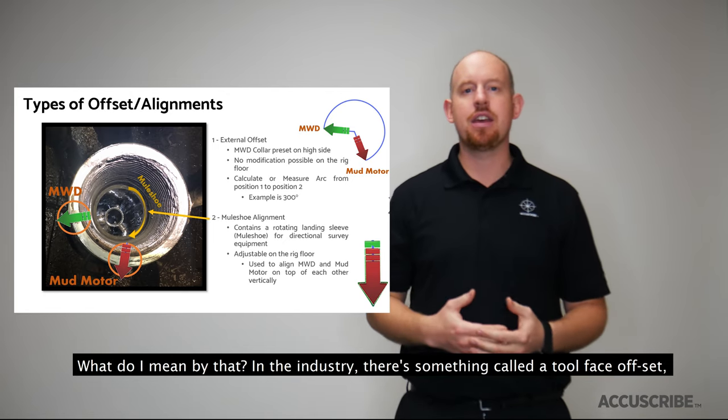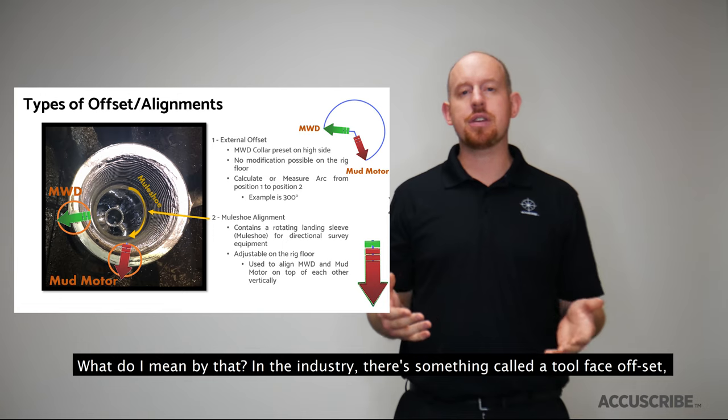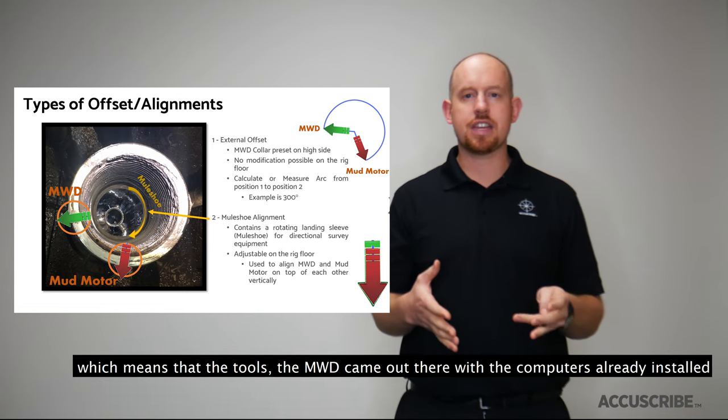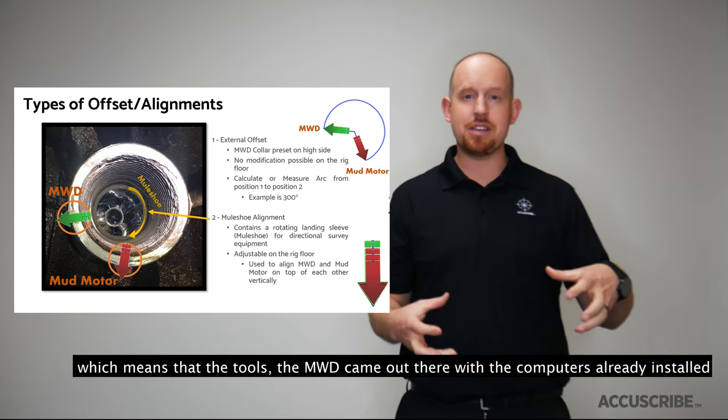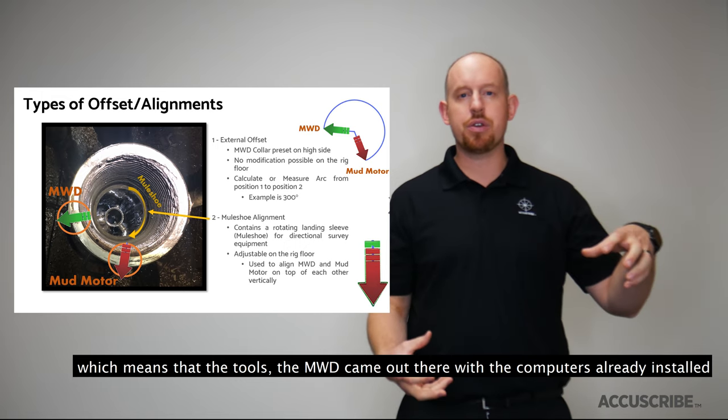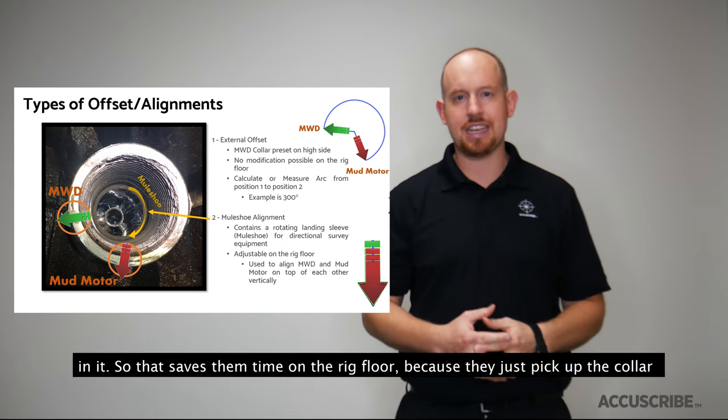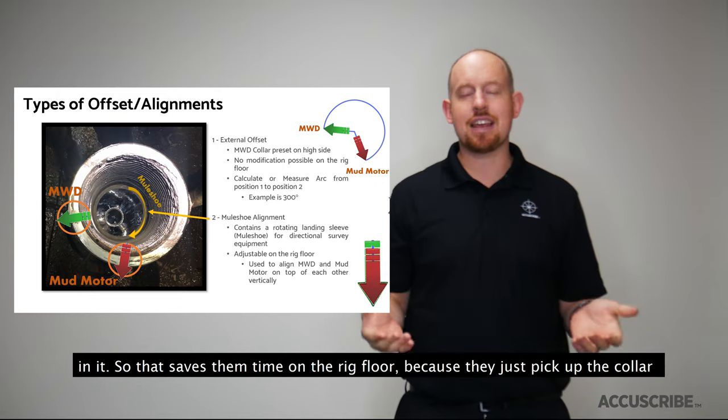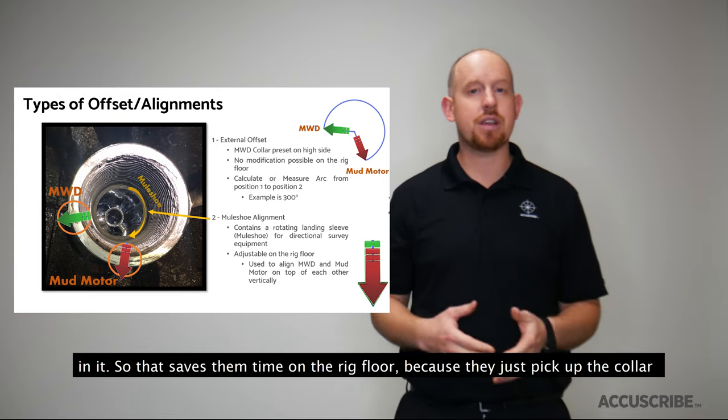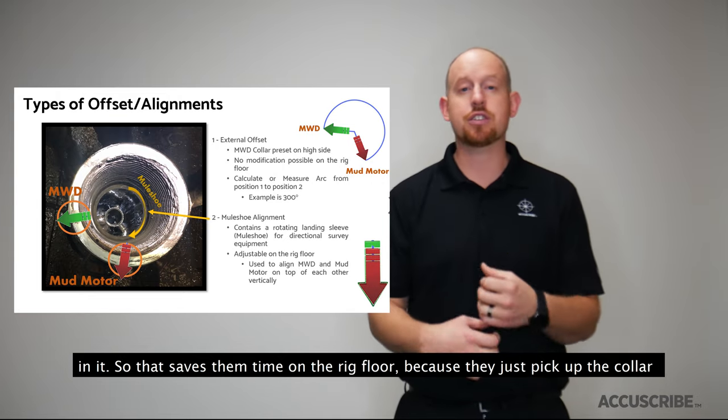What do I mean by that? Well in the industry there's something called a tool face offset which means that the MWD came out there with the computers already installed in it. So that saves them time on the rig floor because they just pick up the collar and screw it together.